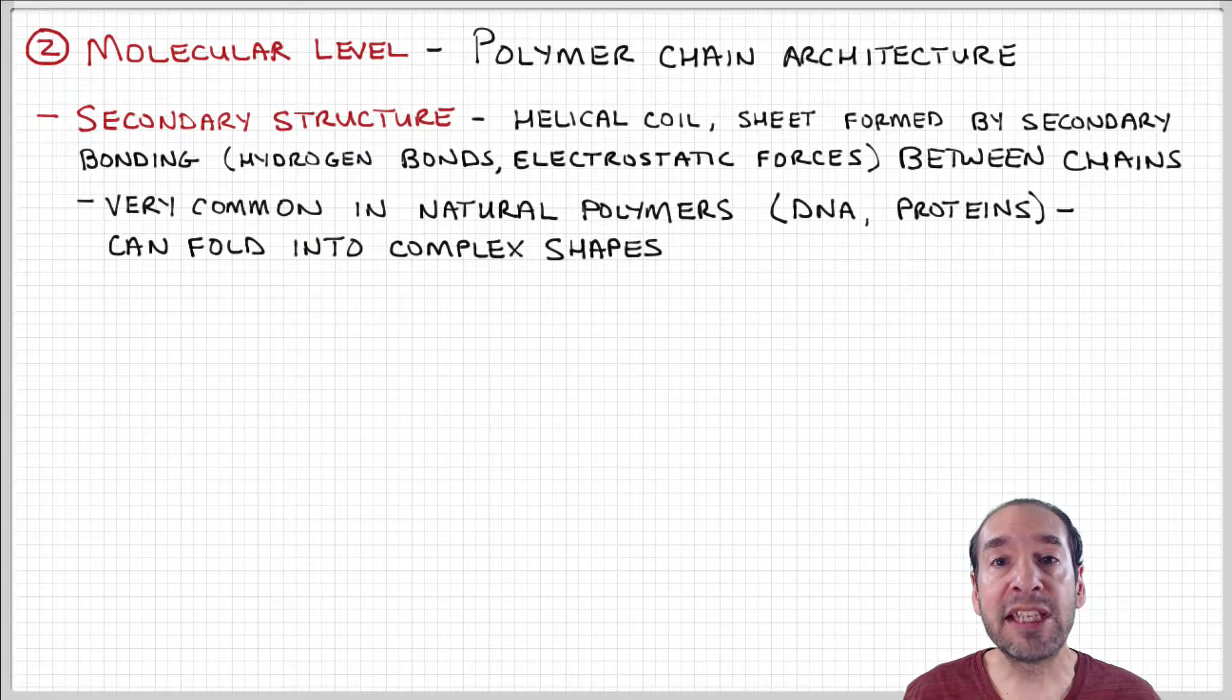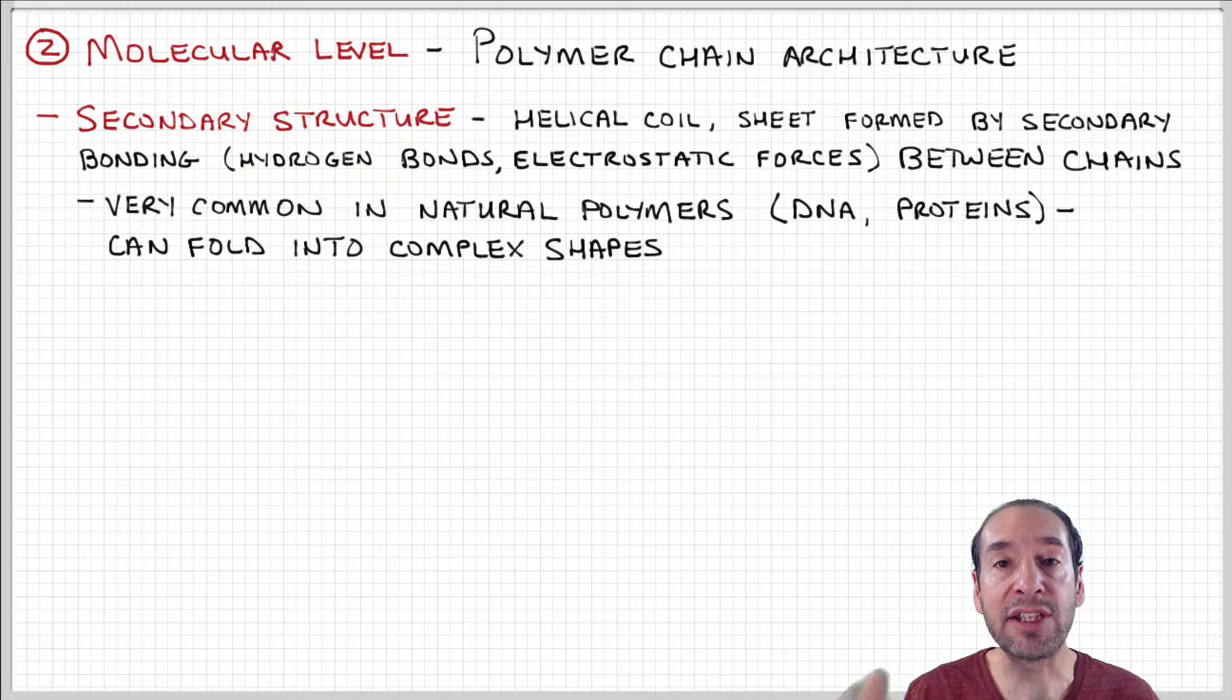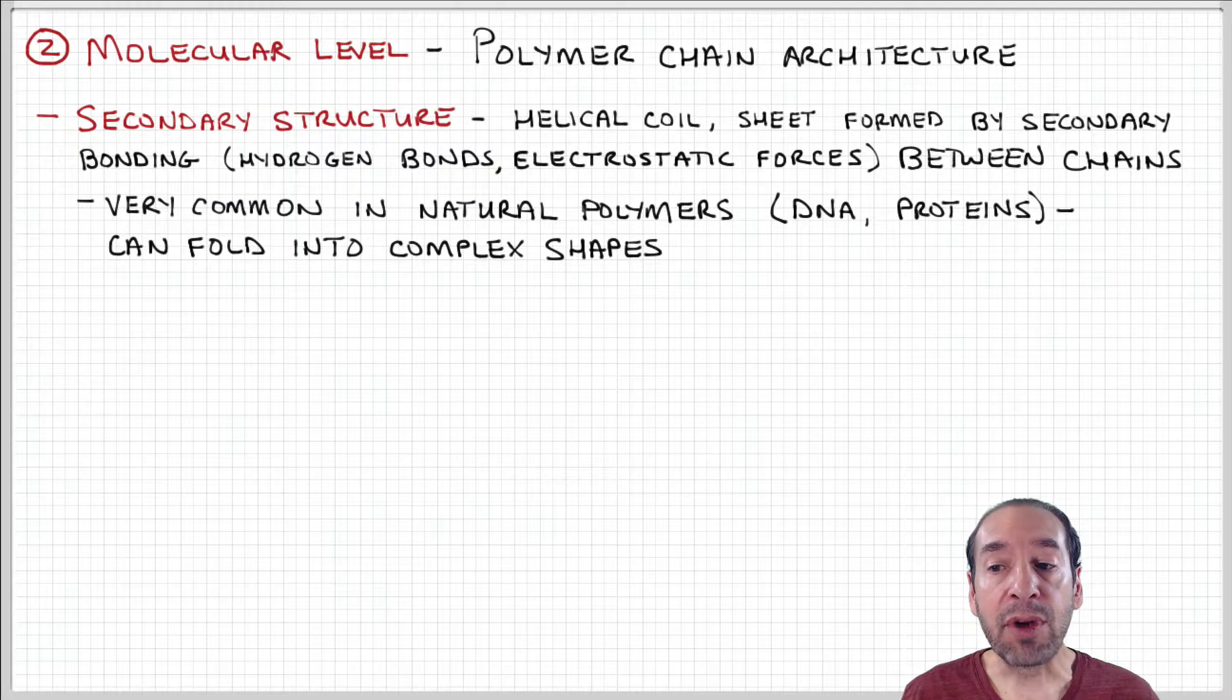We talked about DNA where hydrogen bonding between nucleobases gives rise to this double helix structure when you have two DNA strands attached together. Proteins are another example where you have the chain composed of different amino acids, and they all have different charges and sizes.